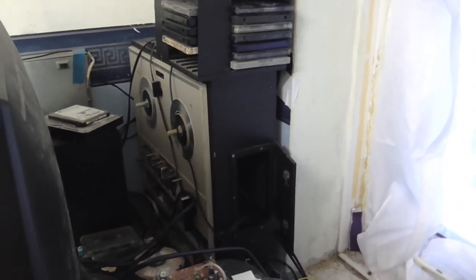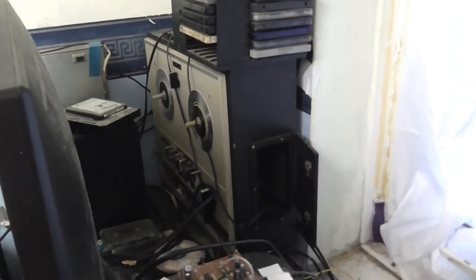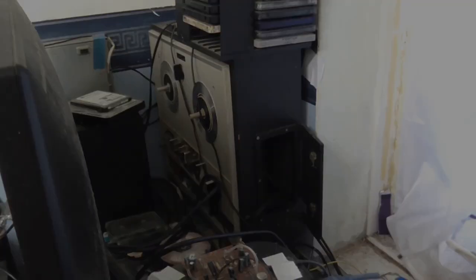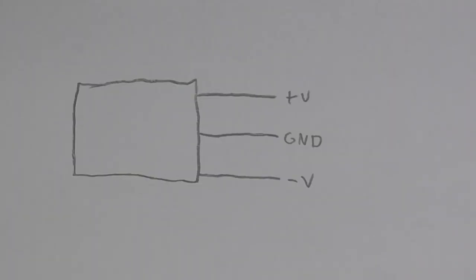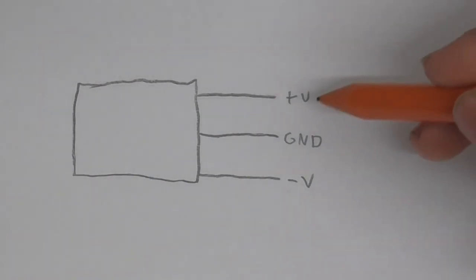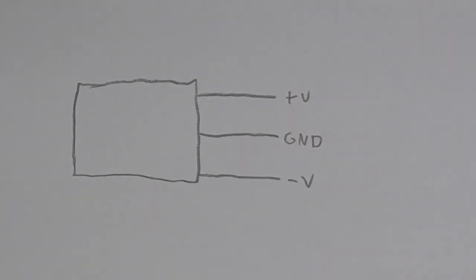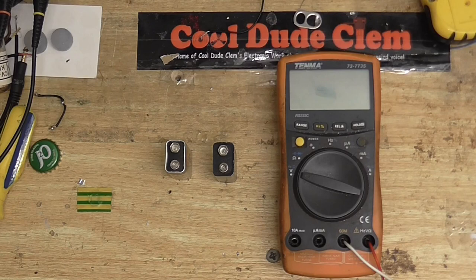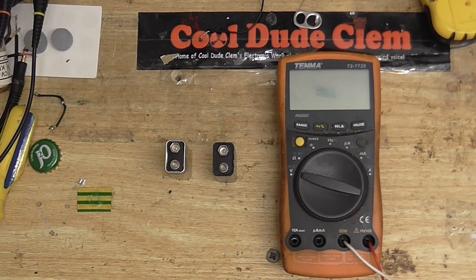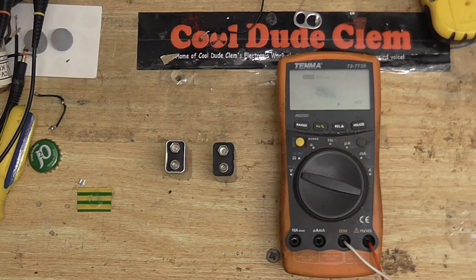I think the first thing I'm going to do is show you how and how not to make a split-rail power supply. What is a dual-rail or split-rail power supply? Well, it's a power supply that has three outputs: one being ground, one being positive voltage, and one being negative voltage. Don't worry if that sounds confusing, because I'm going to explain what that all means. Let's demonstrate this with a couple of batteries and a meter.